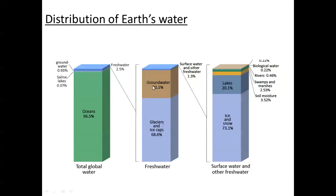Of that 2.5% fresh water, about 67% is glaciers and ice caps. The rest is groundwater, with a small portion of surface water and other fresh water, which is very important for our life. In surface water we have lakes, ice and snow, and also biological water — the water inside all living creatures. In rivers there is 0.46%, swamps and marshes about 2.5%, and soil moisture about 3.52%. Alhamdulillah, in Malaysia we don't have any problem as we have many rivers and high rainfall, unlike the Middle East and North Africa where fresh water is a big issue.